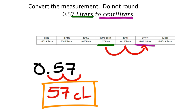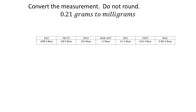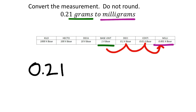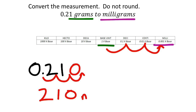Converting 0.21 grams to milligrams: grams is the base unit, and milligrams is three boxes to the right on the chart. Moving the decimal in 0.21 three places to the right, filling an empty place value with zero, gives us 210 milligrams.